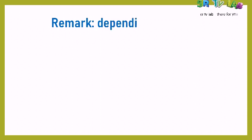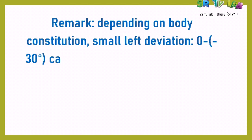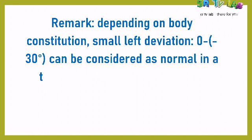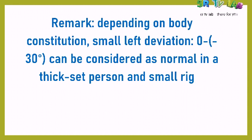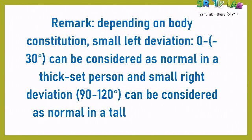Here is an important remark: depending on body constitution, a small left axis deviation can occur. Values of up to −30° can be considered normal in obese individuals. A small right axis deviation — such as 90° to 120° — can also be considered normal in tall and thin persons.